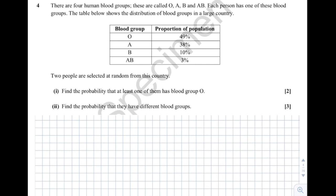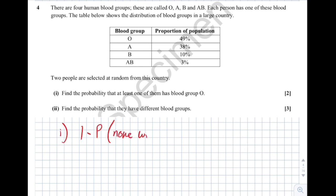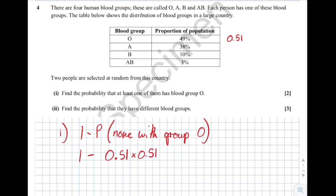Question 4: there are four human blood groups — O, A, B and AB. Two people are selected at random. Find the probability at least one of them has blood group O. Using the complement: 1 minus the probability that no one has blood group O. There's a 0.49 chance of being group O, so a 0.51 chance of not being O. For two independent people, we do 0.51 times 0.51, giving 0.2601. So the probability of at least one being O is 1 minus 0.2601, which is approximately 0.399.